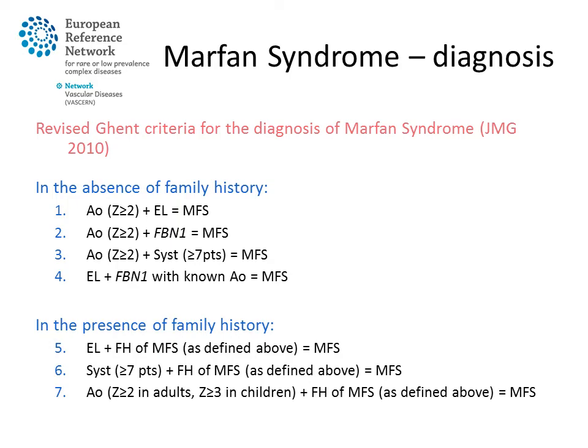Based on the clinical manifestations, family history, and in some cases complemented with genetic information, rules for diagnosing Marfan syndrome have been established in the so-called revised Ghent criteria. In an isolated case, the diagnosis will be confirmed when an individual presents with aortic root dilatation and ectopia lentis, or has aortic root dilatation and a confirmed variant in the fibrillin-1 gene, or has aortic root dilatation with a systemic score above 7, or has ectopia lentis with a pathogenic variant in the fibrillin-1 gene known to be causing aortic dilatation.